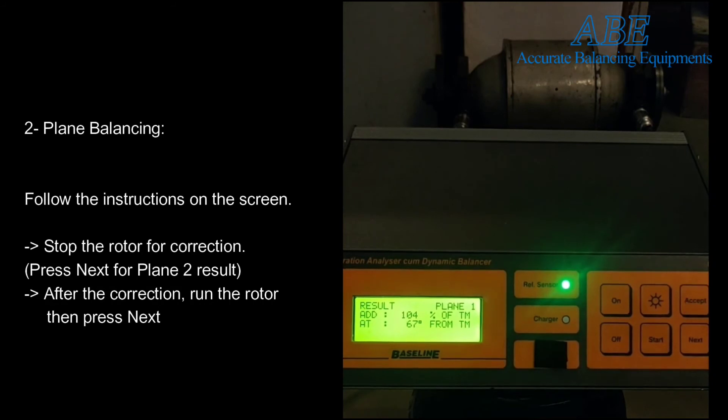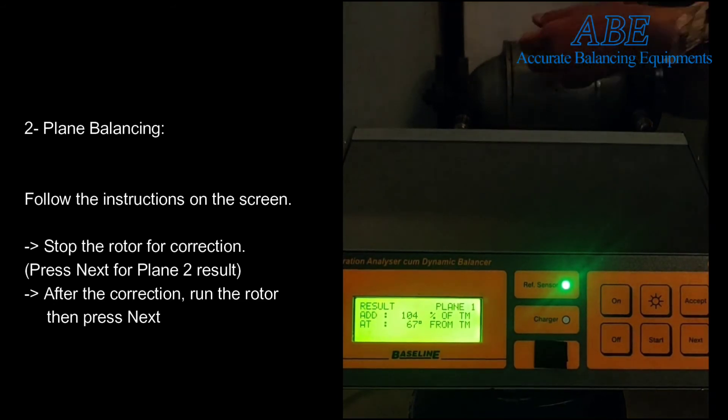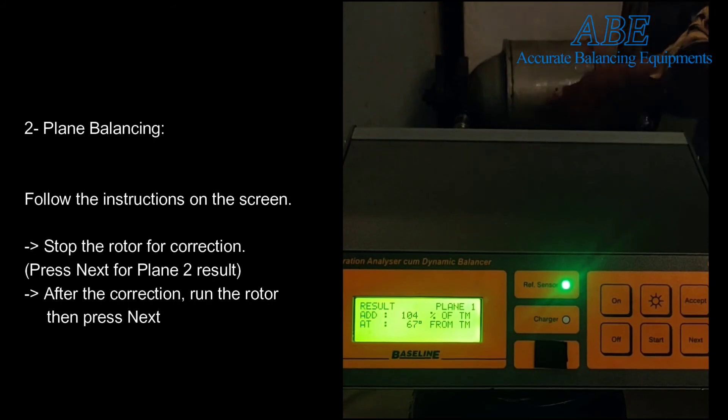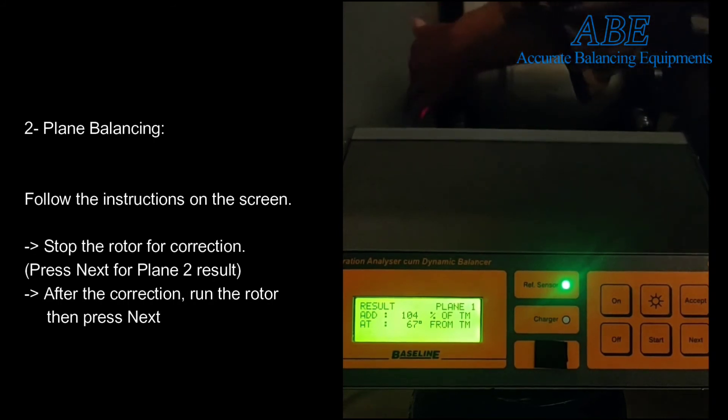Once the result comes, stop the rotor for the correction. In this case, for plane 1, the instrument is indicating that you need to add a weight that is 104% of the trial mass, and it is to be added at a position in the increasing direction, 67 degrees from the trial mass.